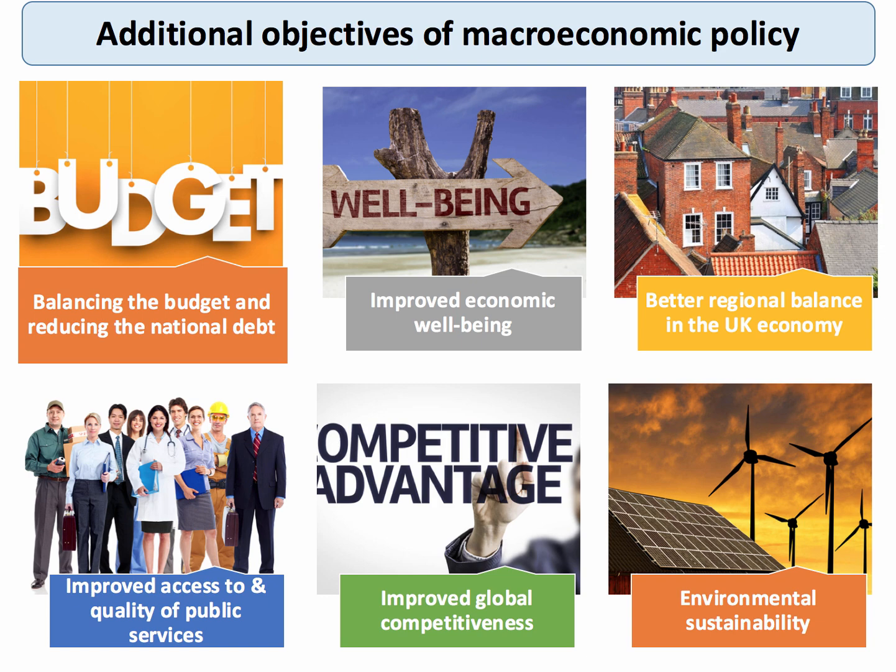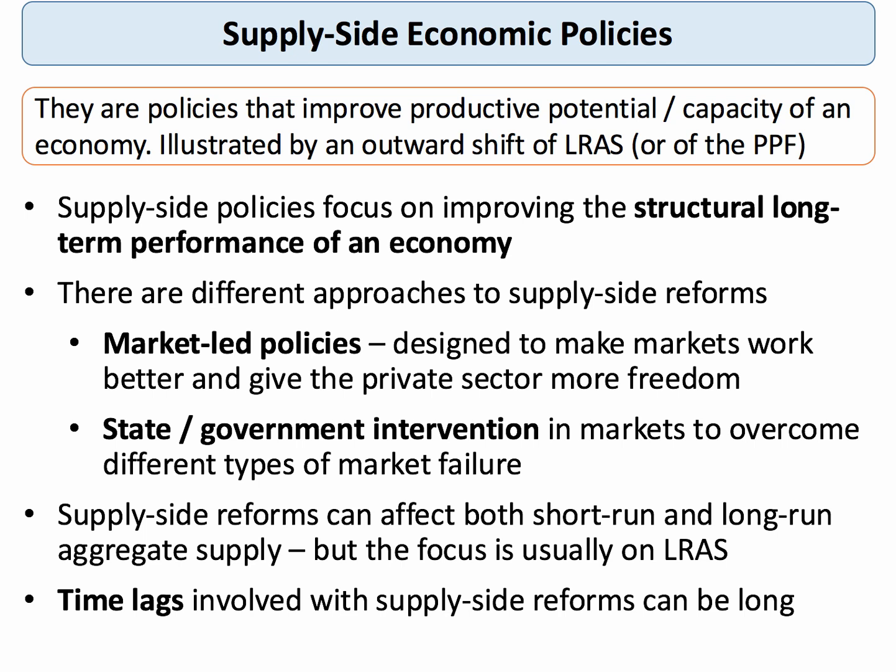The key point is that supply side policies affect nearly all of these key macro objectives, so countries that get the supply side right nearly always see their overall macroeconomic performance improve. Supply side policies, or SSPs for short, aim to increase the productivity and the overall quality of factors of production and hence increase the productive capacity and capability of an economy. The key point is that supply side policies focus on getting the structural long-term performance of an economy moving in the right direction. There are different approaches to supply side reforms which we'll cover in this topic video.